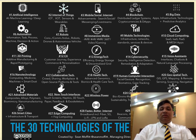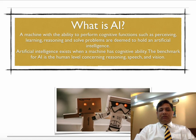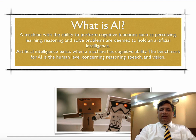Sophia, the robot who has been given citizenship of Saudi Arabia, is a prominent example before all of us. AI refers to an ability to perform cognitive functions such as perceiving, learning, reasoning, and solving problems — that is deemed to constitute artificial intelligence, which exists when the machine is able to demonstrate cognitive ability.